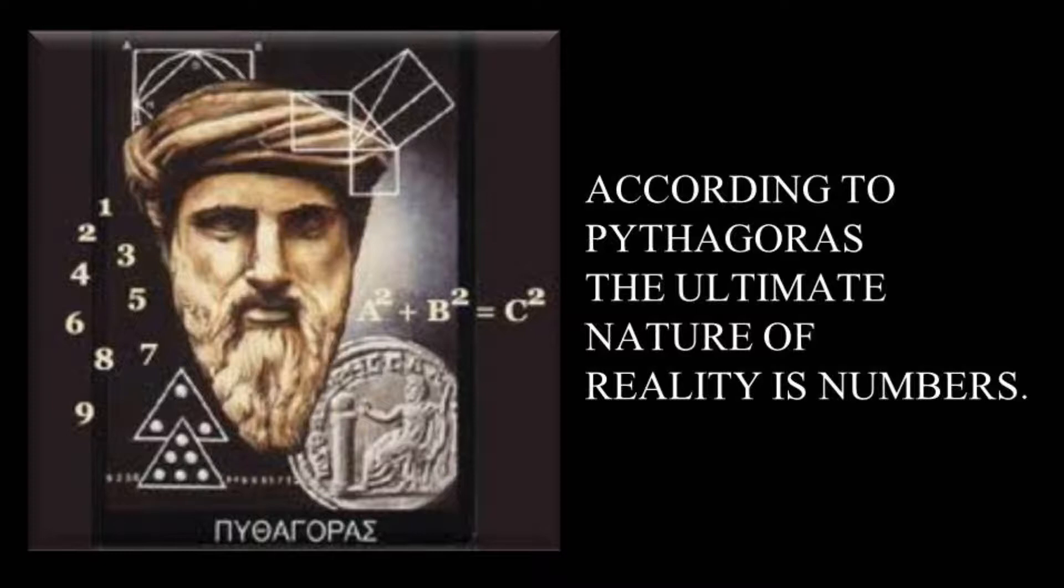They believed that the nature of the universe must be essentially arithmetic. Units of numbers, points, were somehow thought to possess spatial dimensions and to be the ultimate constituents of all objects.